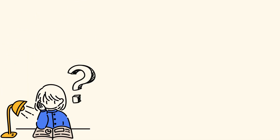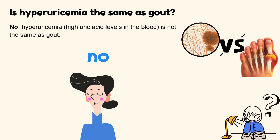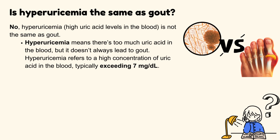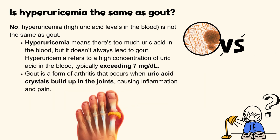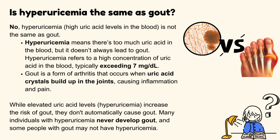Is hyperuricemia the same as gout? No. Hyperuricemia means there's too much uric acid in the blood, but it doesn't always lead to gout. Hyperuricemia refers to a high concentration of uric acid in the blood, typically exceeding 7 milligrams per deciliter. Gout is a form of arthritis that occurs when uric acid crystals build up in the joints, causing inflammation and pain. While elevated uric acid levels increase the risk of gout, they don't automatically cause it. Many individuals with hyperuricemia never develop gout, and some people with gout may not have hyperuricemia.